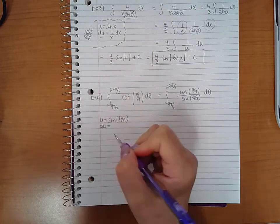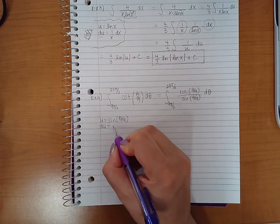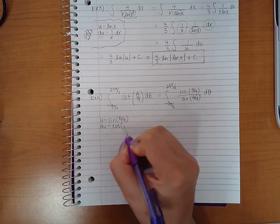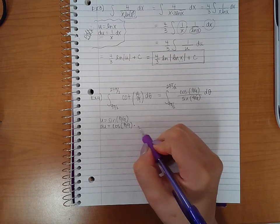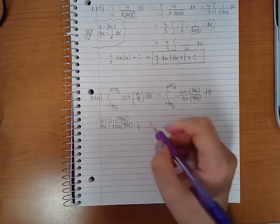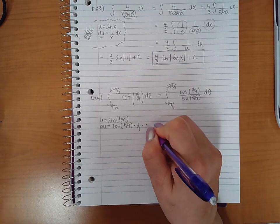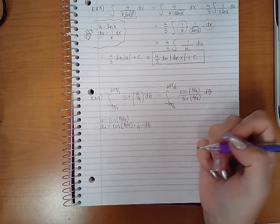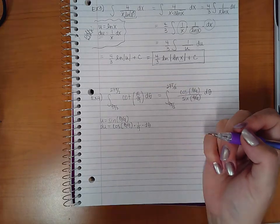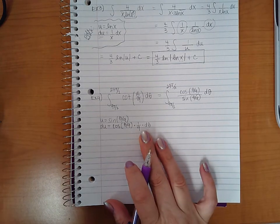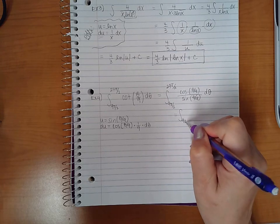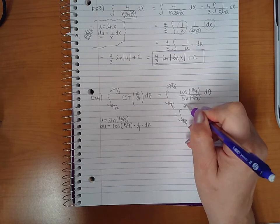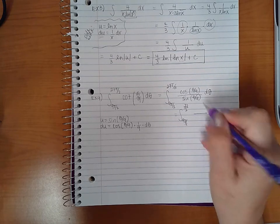Then du is going to require chain rule, so the derivative of sine is cosine of the same angle, and applying the chain rule times the derivative of that angle, which is 1 ninth, and we have to tag on a d theta. If I try to substitute, I am going to have sine, which is u, in the denominator.